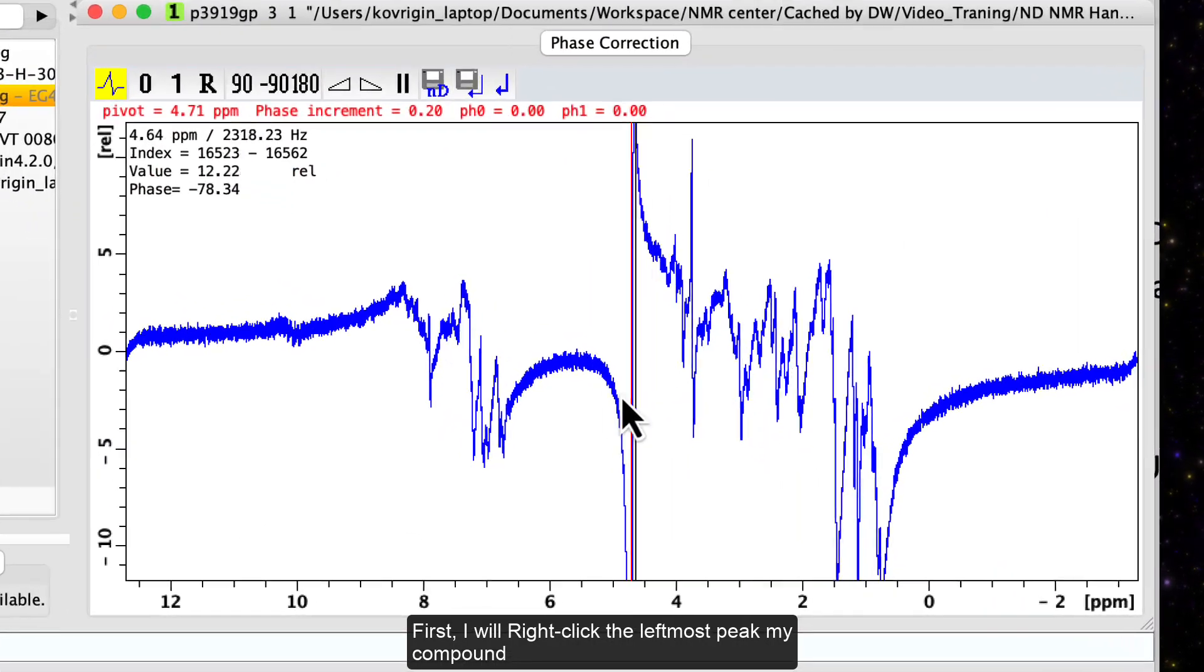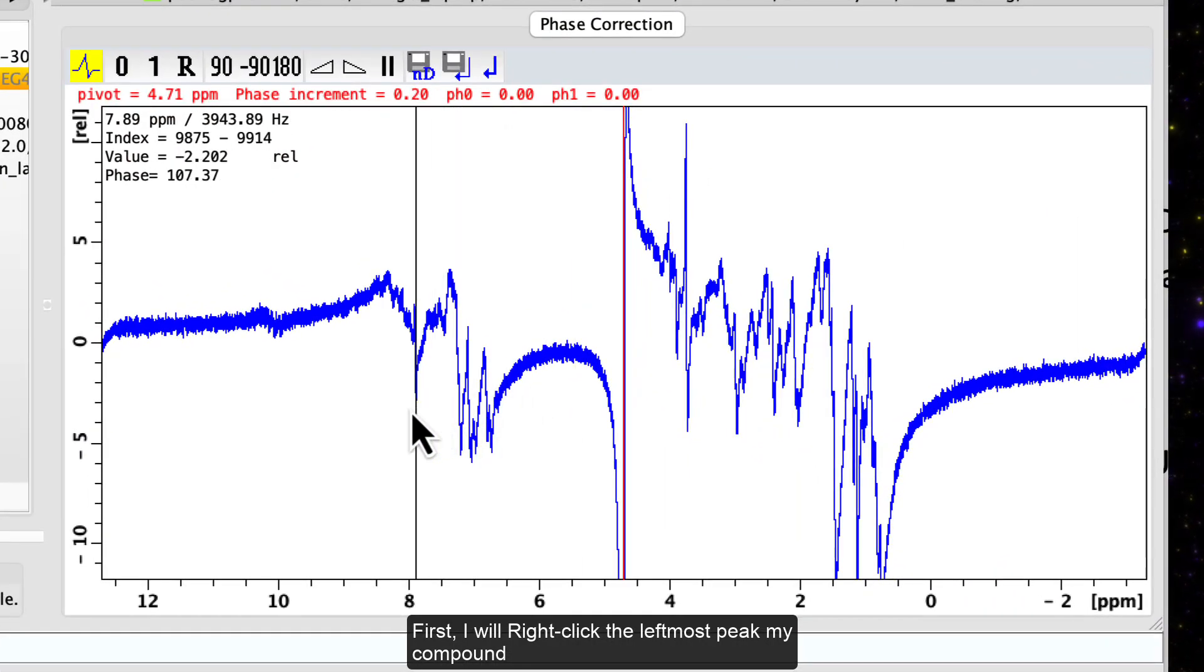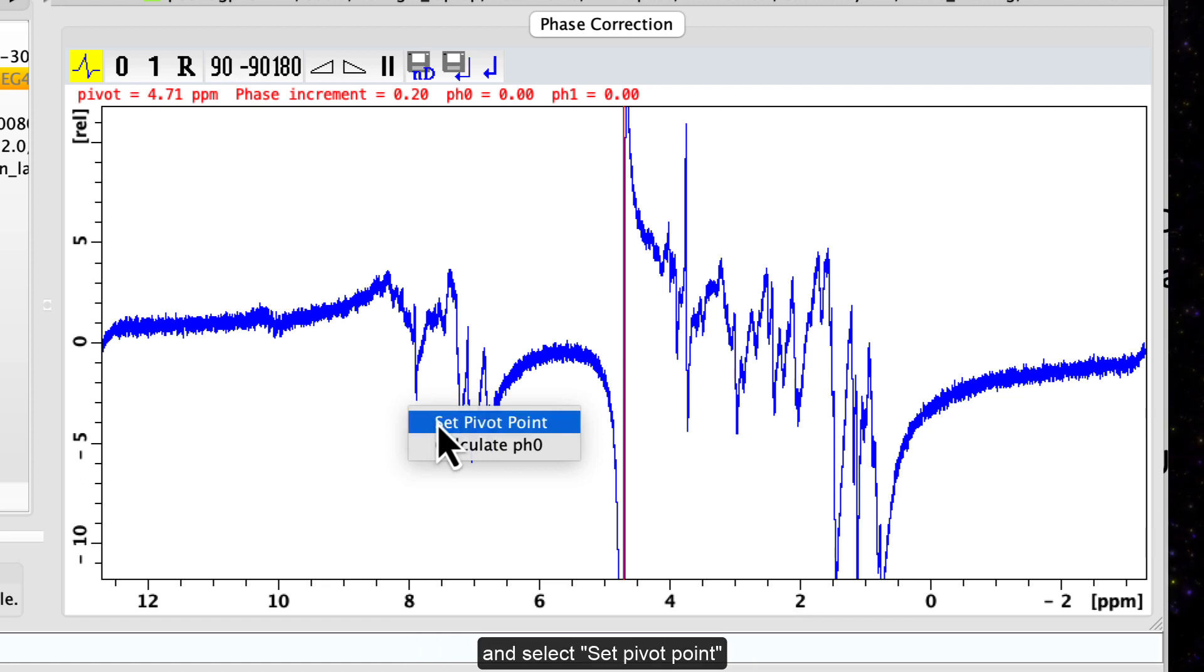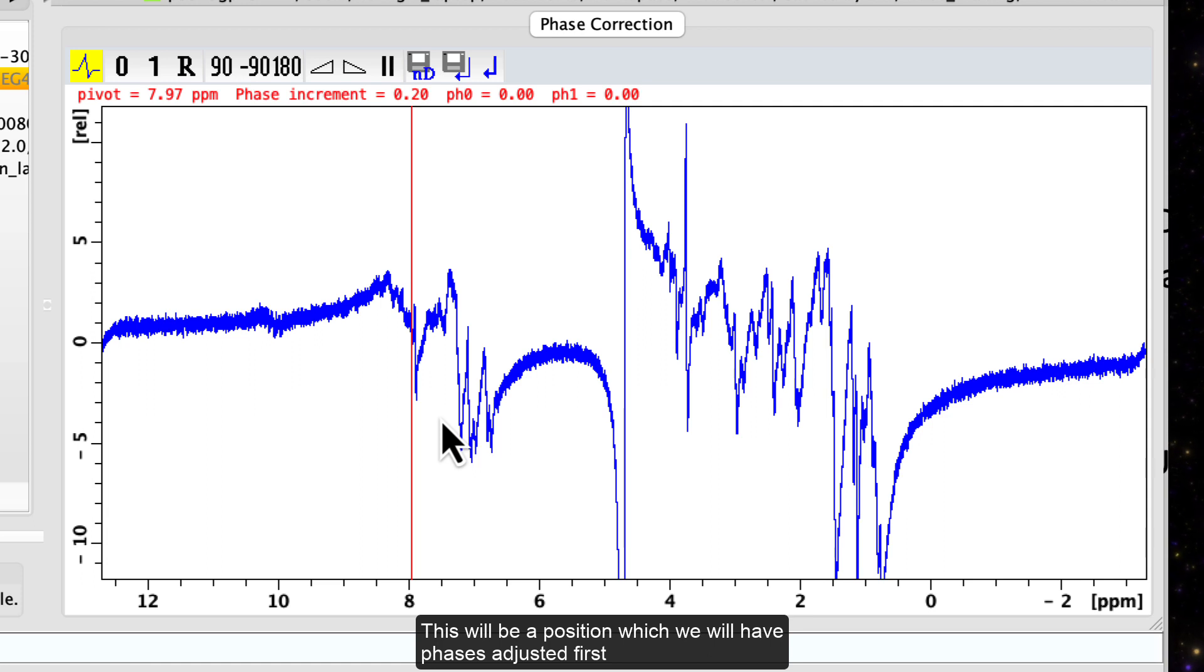First, I will right-click the leftmost peak of my compound and select set pivot point. This will be a position which will have phases adjusted first.